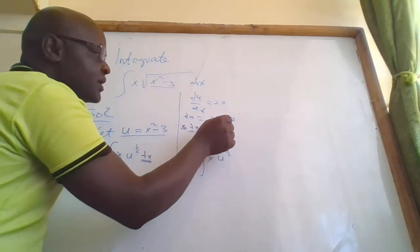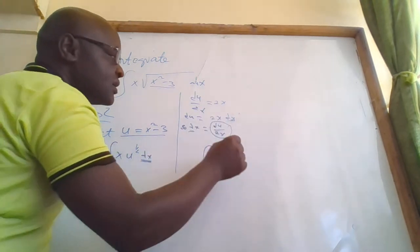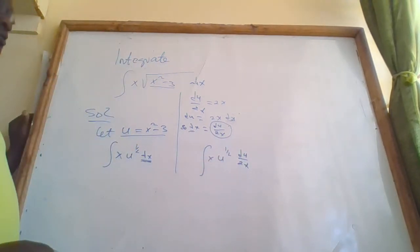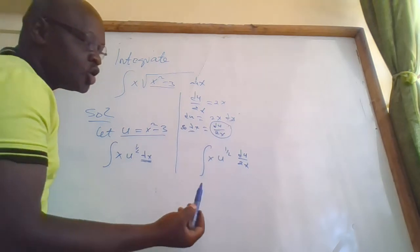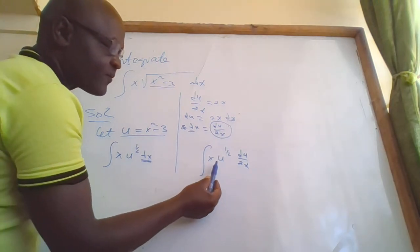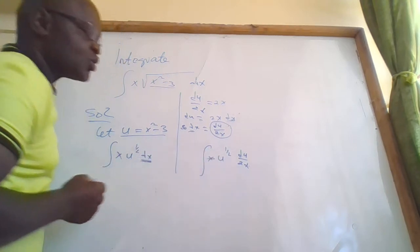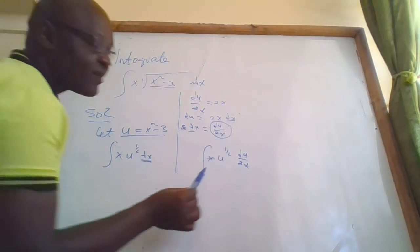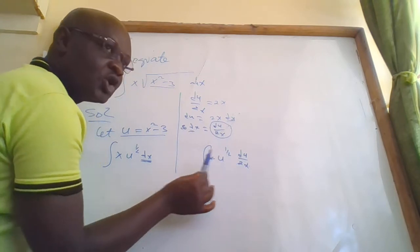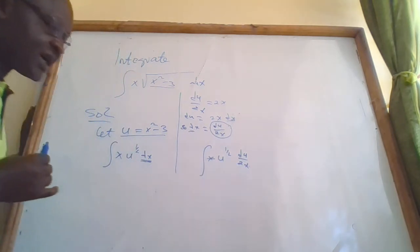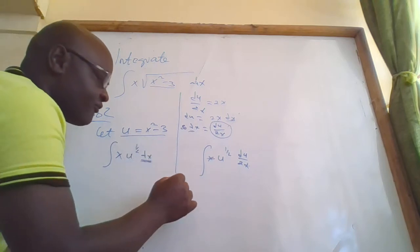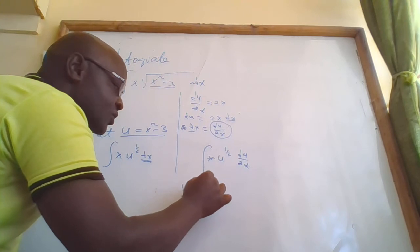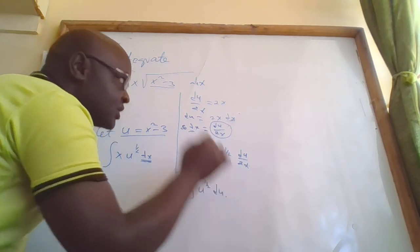So dx is given by du over 2x. From here you can see that the x will cancel with the x. We then have the constant 1 over 2, which we take outside the integral. Therefore we have one half times the integral of u raised to one half, then du.